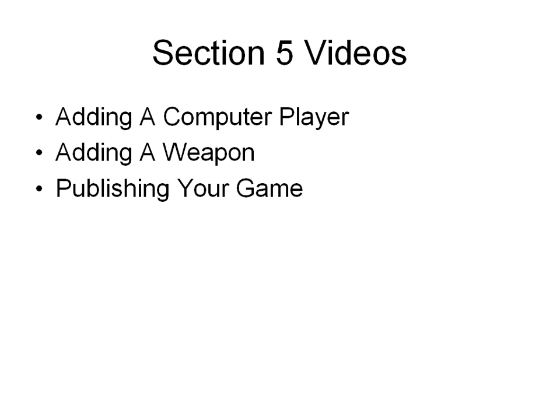In section five, I show you how to add a computer player, add a weapon, and publish your game. If you're interested in creating a first-person shooter or a game with weapons, section five shows you how to do that fairly easily. You can have a computer enemy that runs around and weapons on the ground you can pick up. For publishing, I show you how to take your game files and make them into an executable file you can give to friends, distribute, or sell online.